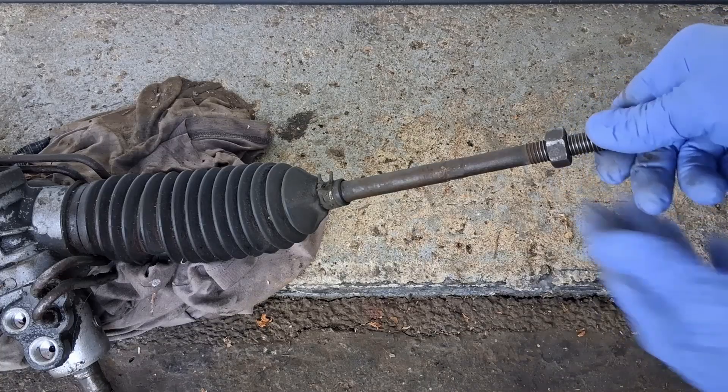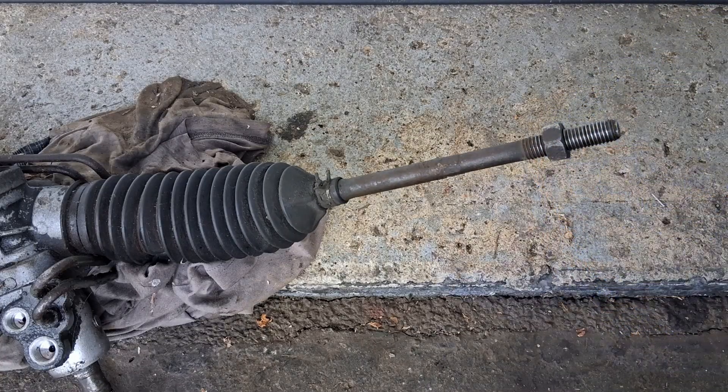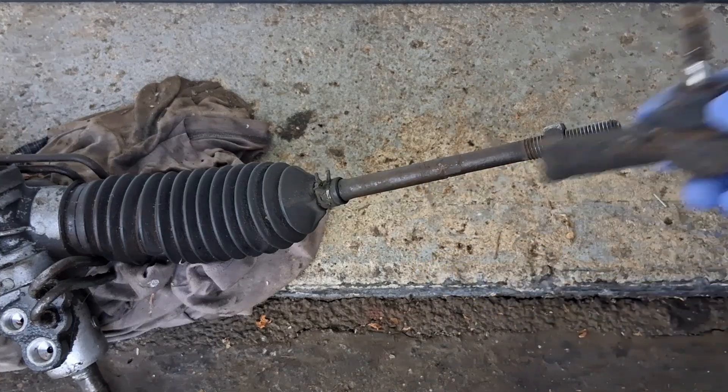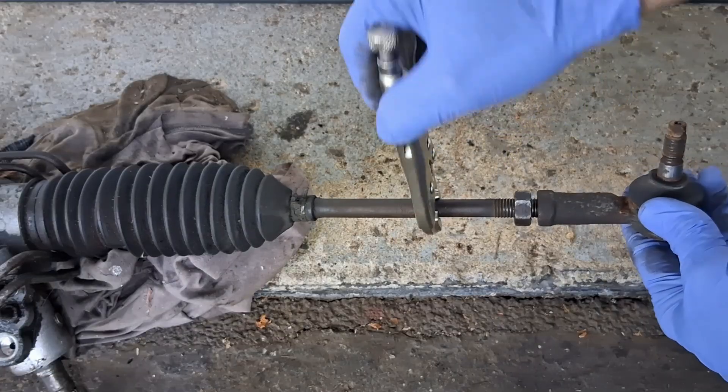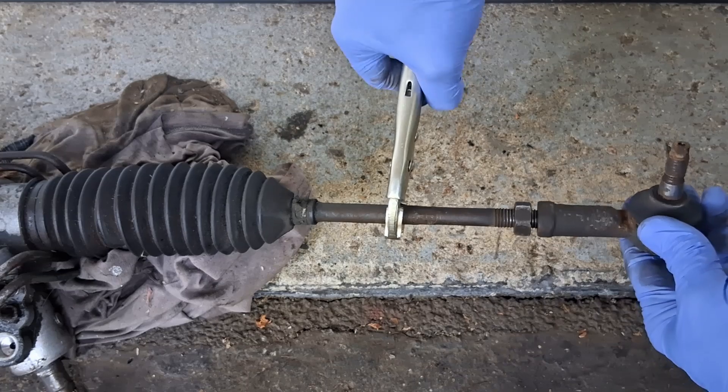Here I have a steering rack removed from a car. Tie rod end screws on the end. By turning this rod, it goes in and out of the tie rod end, adjusting the toe in or toe out.